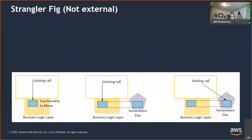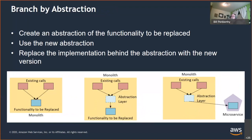If changing the existing call isn't ideal, you should evaluate the next pattern: Branch by Abstraction. This is very similar to the Strangler Fig; however, the Strangler Fig depends on external calls coming into the system, while Branch by Abstraction stays completely within your application and does not require any changes to external systems. Many people combine both approaches and call it the Strangler pattern, but they're actually uniquely different. It's important to talk about these patterns separately using appropriate terminology.